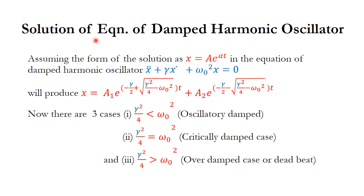What will be the solution of the Damped Harmonic Oscillator? Let us find the solution by assuming the form x equals A times e to the power alpha*t, where we don't know what alpha or A are. Substituting this x into the differential equation of the Damped Harmonic Oscillator and finding x-dot and x-double-dot, we obtain the general solution: x equals A1 times e to the power (minus gamma/2 plus root of (gamma²/4 minus omega_0²)) times t, plus A2 times e to the power (minus gamma/2 minus root of (gamma²/4 minus omega_0²)) times t.